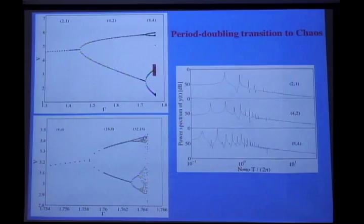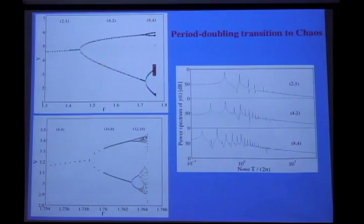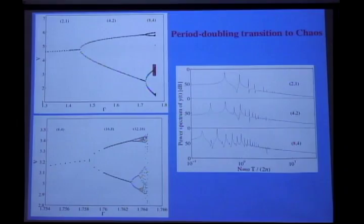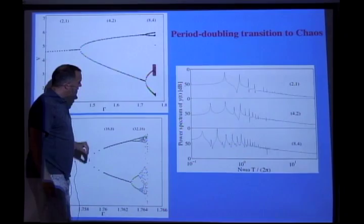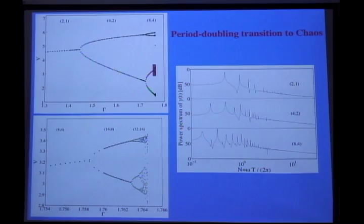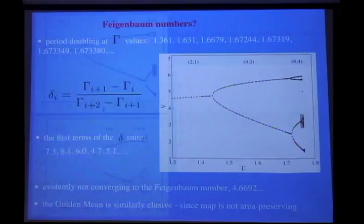Looking at these period doubling transitions in detail — zooming in on the 2-1 branch: 2-1 goes to 4-2, then 8-4, and you really see this nice cascade. You can look at the power spectrum and see the evolution — they are indeed period doubling transitions.